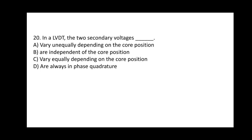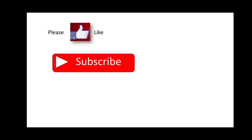Question 20 (last question): In an LVDT, the two secondary voltages dash dash. Options: A) Vary unequally depending on the core position, B) Are independent of the core position, C) Vary equally depending on the core position, D) Are always in phase quadrature. The correct answer is option A — the two secondary voltages vary unequally depending on the core position. Thank you.